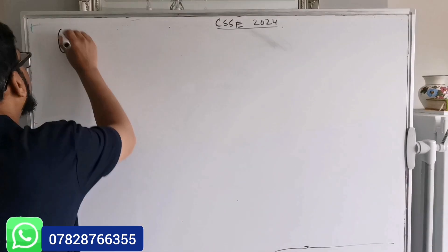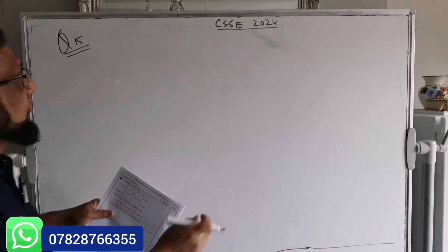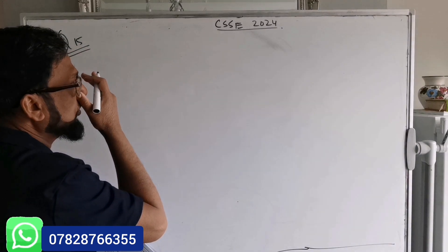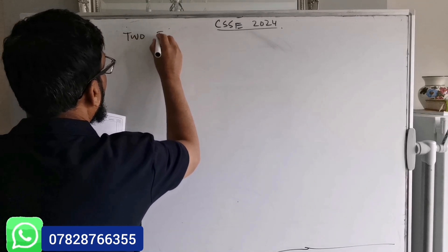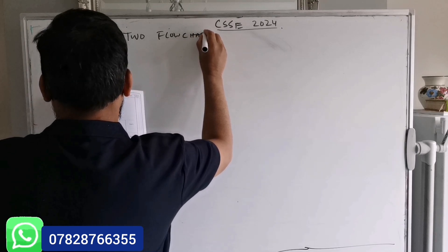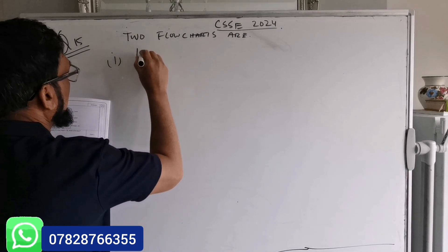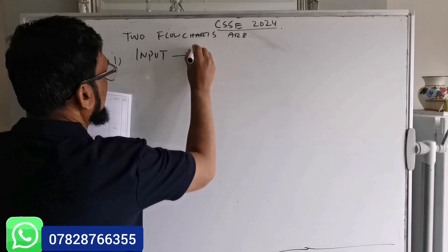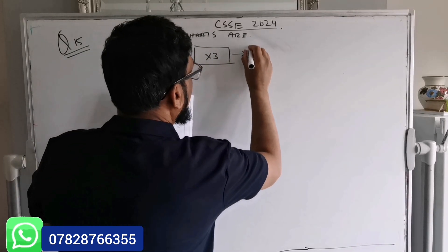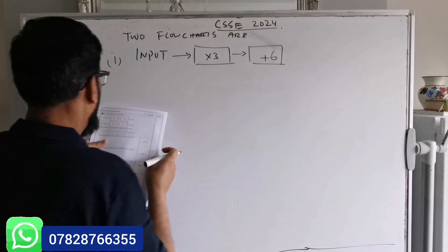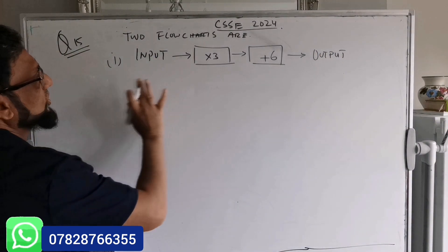Back to the topic — question number 15, CSC 2024. The question is basically a co-function machine but uses the concepts of equations. So question number 15 says there are two flow charts. Flow chart number one: input, arrow, then a box 'times by 3', arrow, then a box 'plus 6', then output.